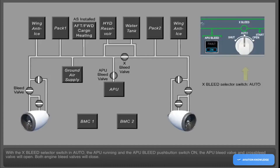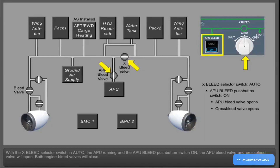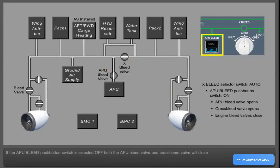With the cross bleed selector switch in auto, the APU running and the APU bleed push-button switch on, the APU bleed valve and cross bleed valve will open. Both engine bleed valves will close. If the APU bleed push-button switch is selected off, both the APU bleed valve and cross bleed valve will close.